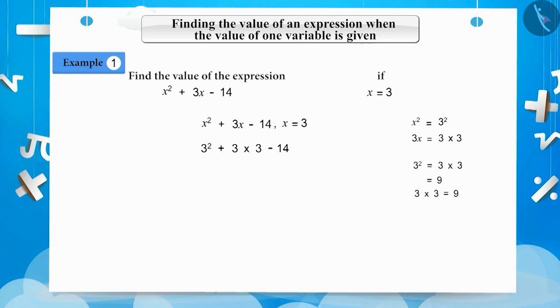Substituting these values in the equation, we get 9 + 9 - 14. 9 + 9 is 18, and 18 - 14 is 4. Therefore, the answer will be 4.